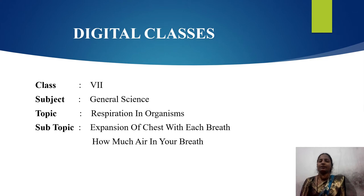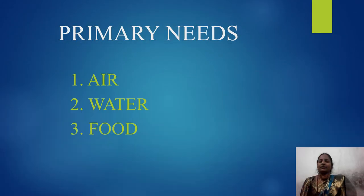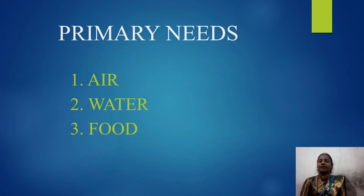Children, what are the primary needs for us? We know that there are three things that are very useful to us. The first one is air, the second one is water, and the third one is food. We know that people may survive without food for several days — they go on a fast or hunger strike — but during that time they drink some water or other liquids at least once a day.